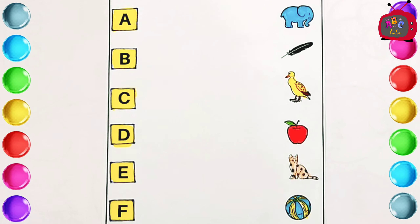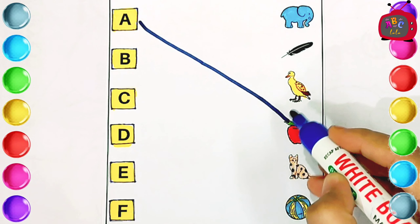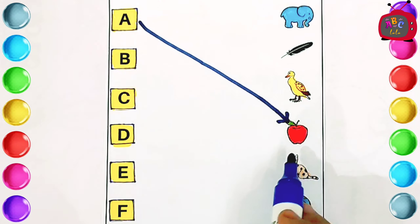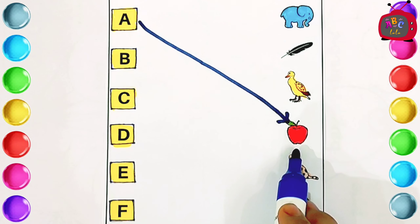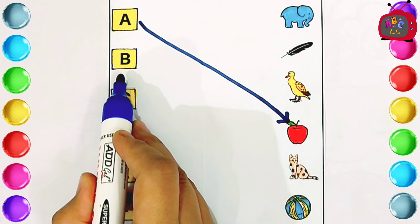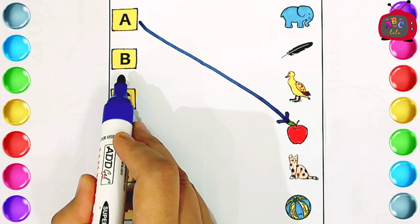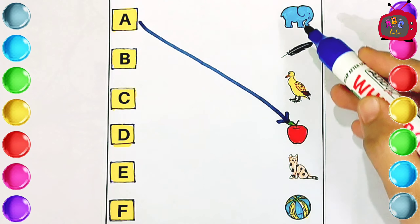A. A is for Apple. Apple. A is for Apple. A. B. B is for Ball.